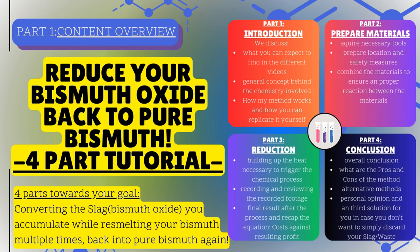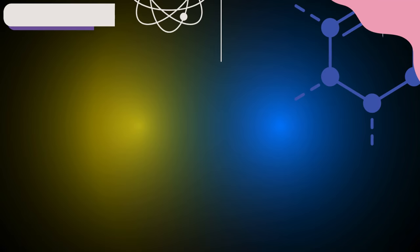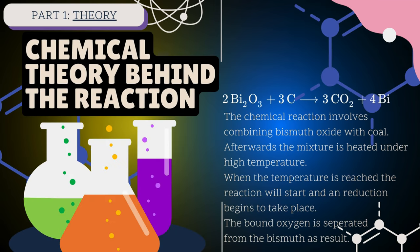Now let's begin with the chemical theory behind the reaction. The chemical reaction involves combining bismuth oxide with charcoal, also known as carbon. The mixture is heated under high temperature. When the temperature is reached, the reaction will start and the reduction begins. The bound oxygen is separated from the bismuth, and the result will be pure bismuth.